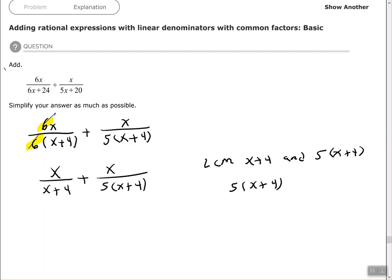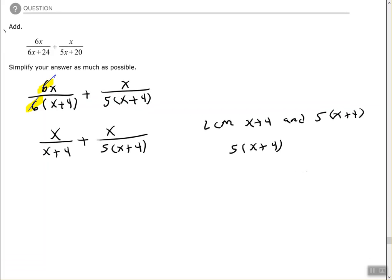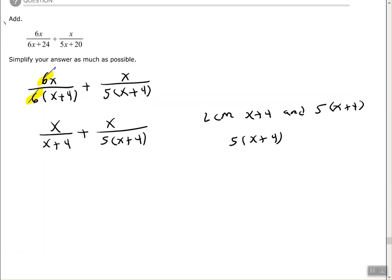So 5 times x plus 4 is my least common multiple. That's going to be my common denominator. Let's make a big fraction. What did I multiply the x plus 4 by for my first fraction to get 5 times x plus 4? I have to multiply by 5, so I multiply the numerator by 5 as well, giving me 5x.